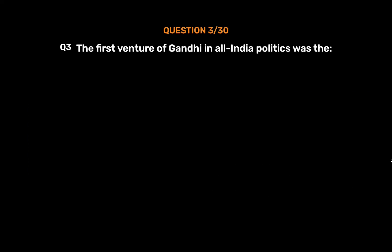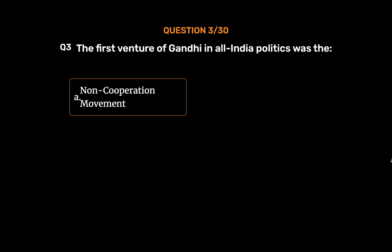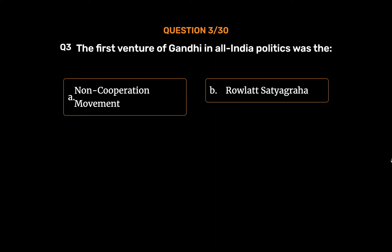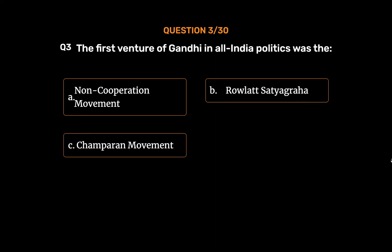Question No. 3. The first venture of Gandhi in all India politics was: Option A: Non-cooperation movement. Option B: Rowlatt Satyagraha. Option C: Champaran movement. Option D: Dandi March. The correct answer is Option C: Champaran movement.